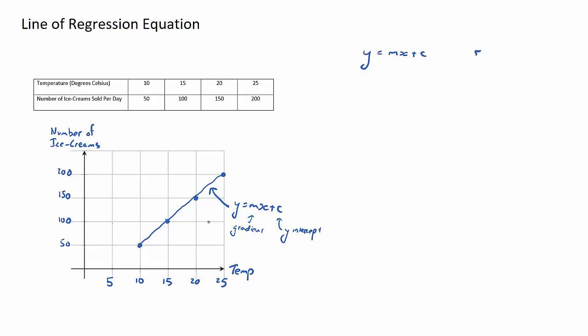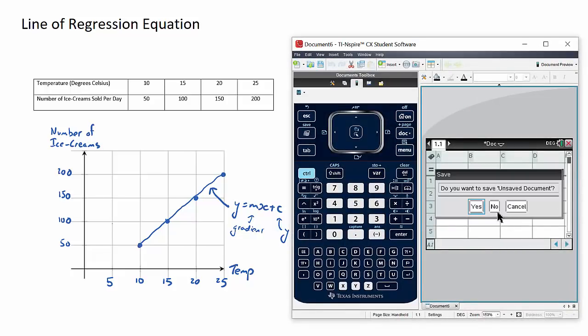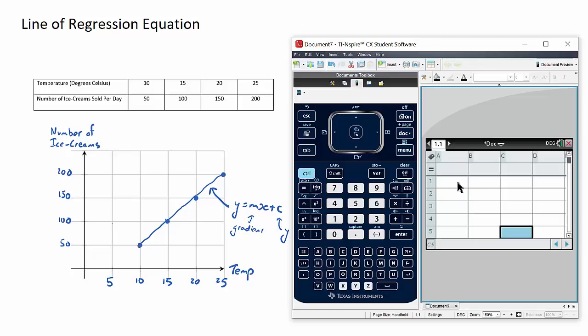Let's go ahead now and find the line of regression equation for this data set here. We're going to use our calculator. We start with this, we open a spreadsheet using this green icon here. Now I'm going to create two columns.